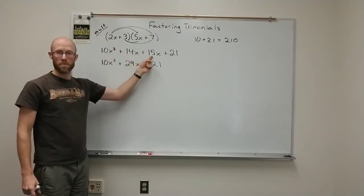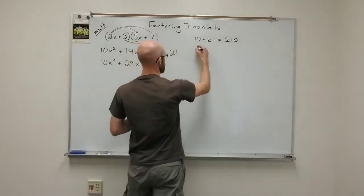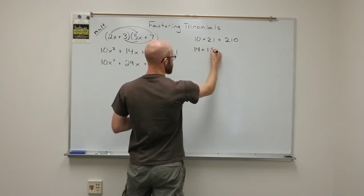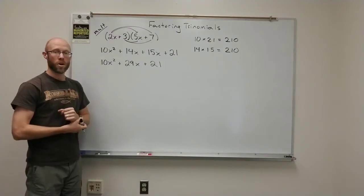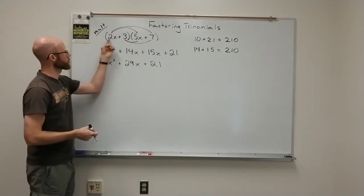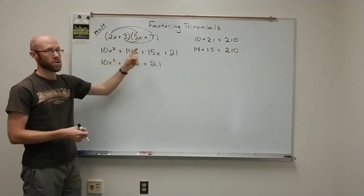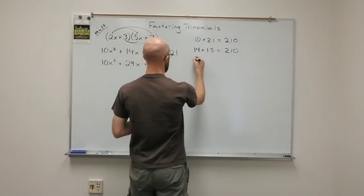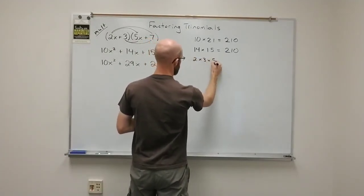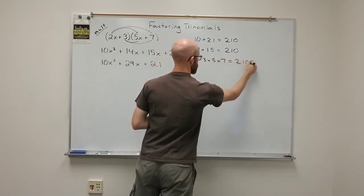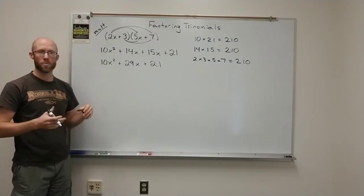If you were to multiply 14 times 15, and you could try this on your calculator as you watch, or do it by hand, but if you multiply 14 times 15, you will also get 210. What's also interesting is if you go up to the original parentheses here, the original factored form, and multiply all of these coefficients together, if you took 2 times 3 times 5 times 7, you will get 210. And so all those products give you 210.